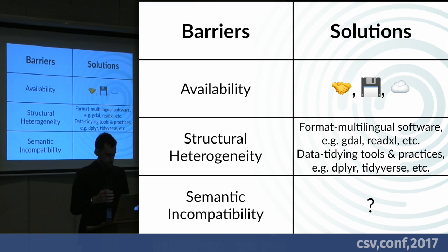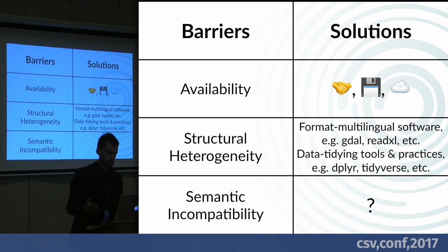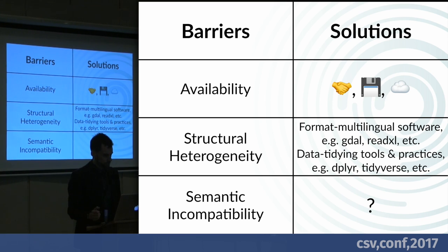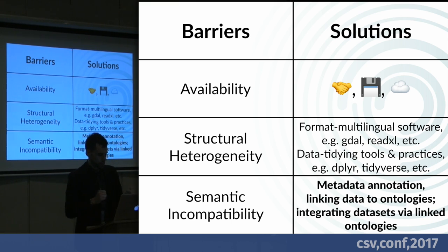Thinking about the barriers to data integration and solutions: the data availability problem is solved with data agreements and ways to transport files; the structure problem is solved by the growth of software ecosystems and practices for tidy data; and the way you get around semantic incompatibility is to annotate your tabular data with links to ontologies, so you can integrate datasets through those ontologies.